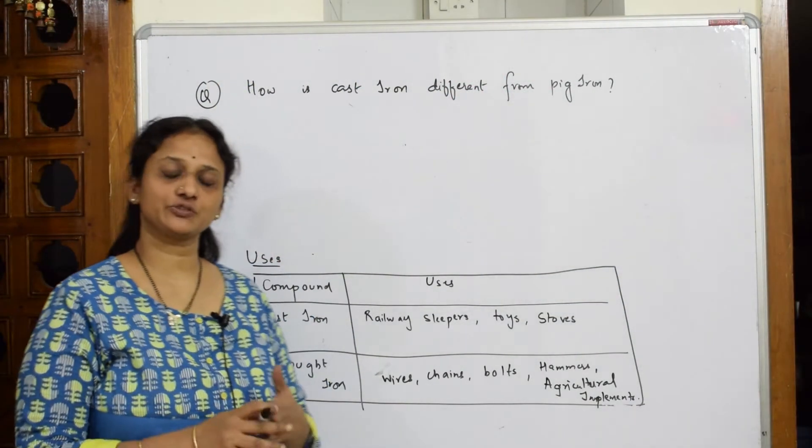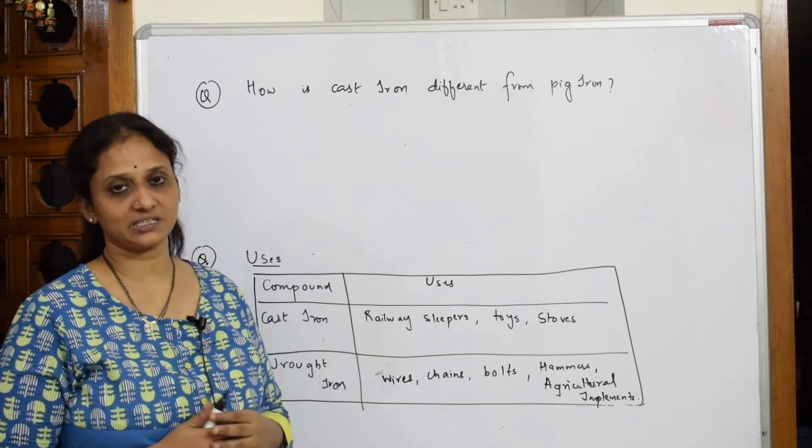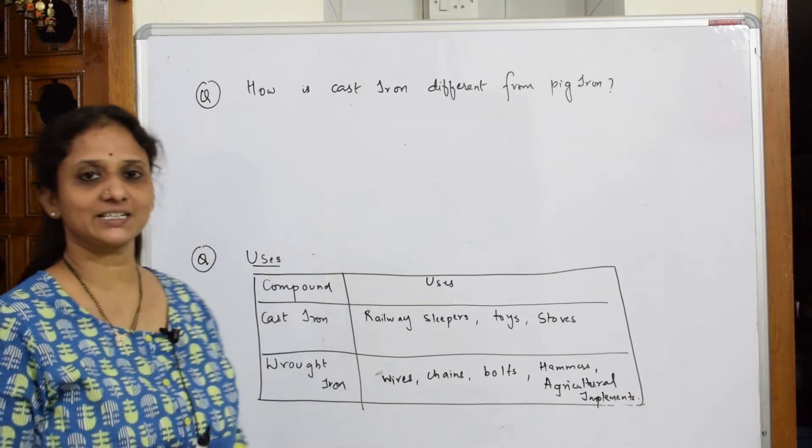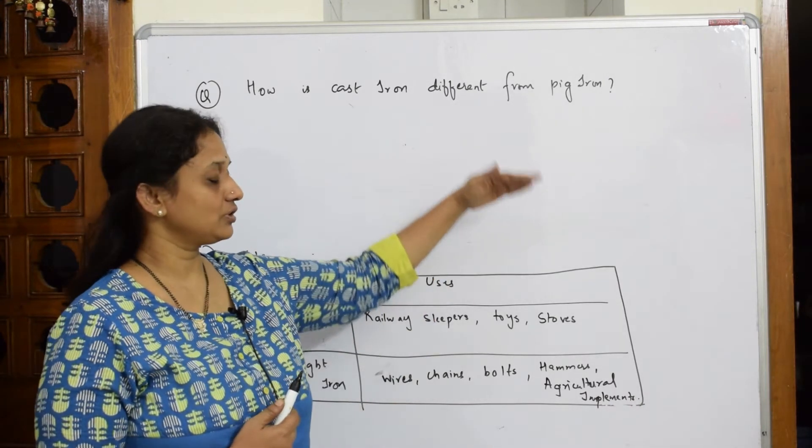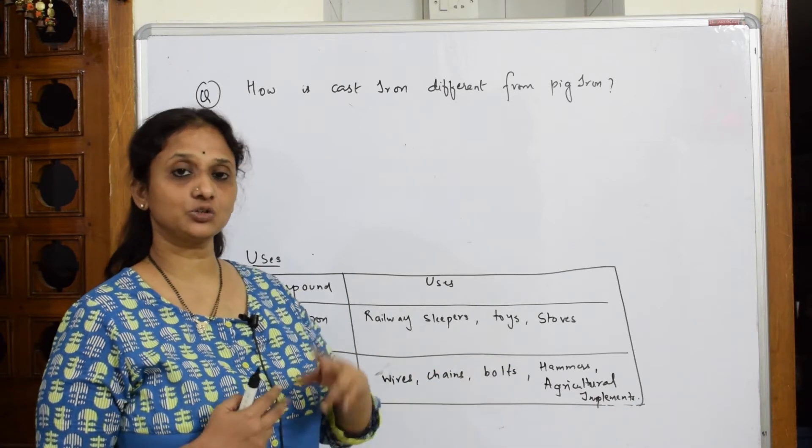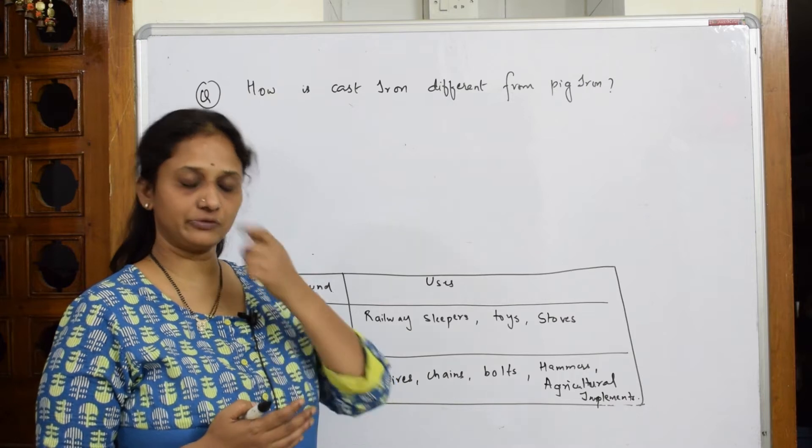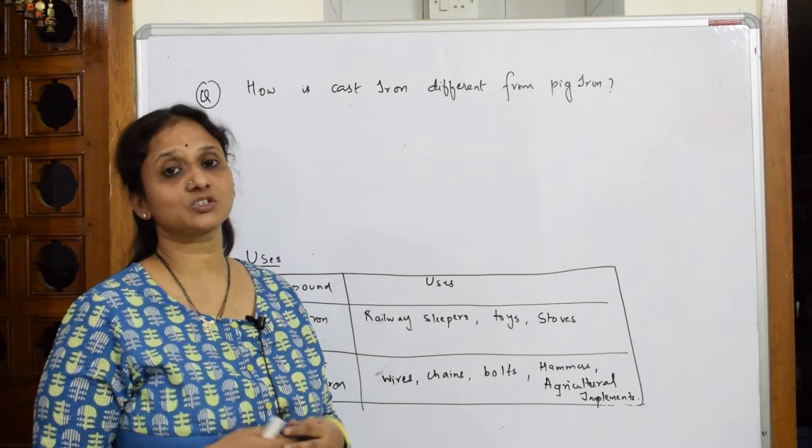We've already seen the extraction of iron, the complete process. Please go through all the linked topics in iron. Now this is a quite common question, so let us see. In your blast furnace, after following the different zones, we finally got two things: molten slag that floats above the molten metal. That metal which we collected is called pig iron.